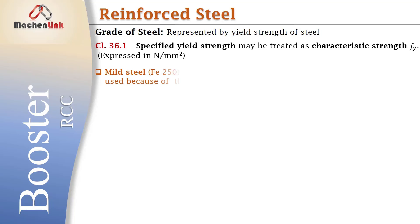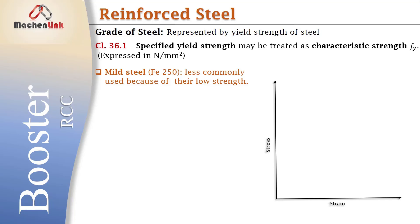The first one is mild steel, i.e., Fe 250. Here Fe represents iron and 250 represents yield strength in Megapascal. Mild steel is less commonly used because of its low strength. If we draw the stress-strain curve for mild steel, it comes out to be like this — and you might have learnt this in strength of materials.